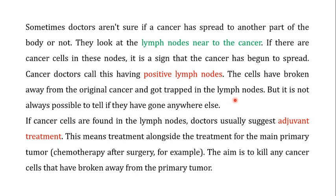If cancer cells are found in the lymph nodes — that is, if there is a positive lymph node — the doctor usually suggests what is known as adjuvant treatment. This treatment means that alongside the treatment for the main primary tumor, you will have to use other strategies like chemotherapy after surgery. The aim is to kill any cells that have broken away from the primary tumor so that you can prevent the spread of cancer to other parts of the body.